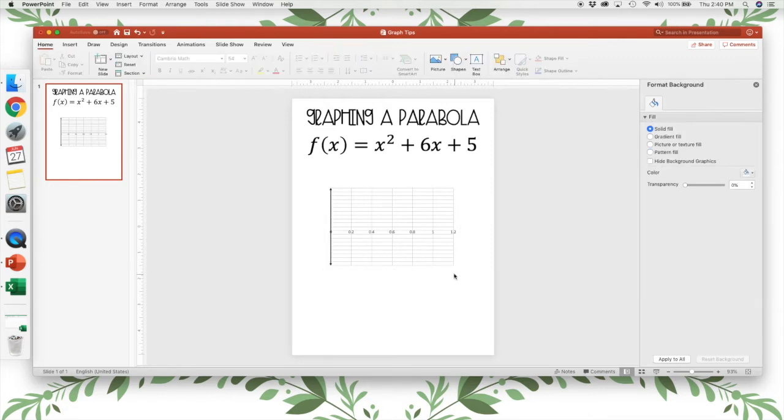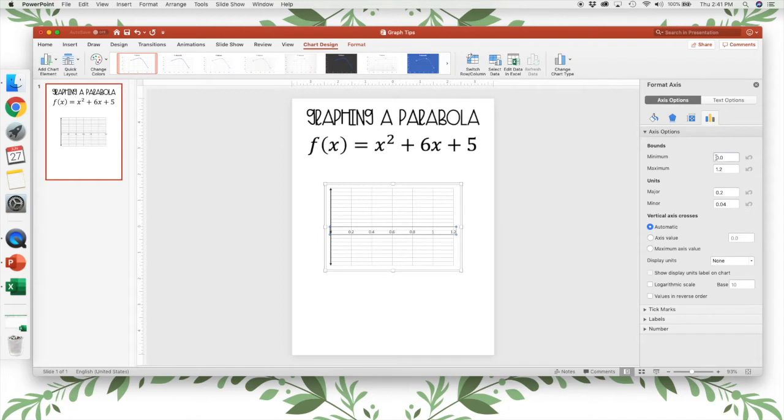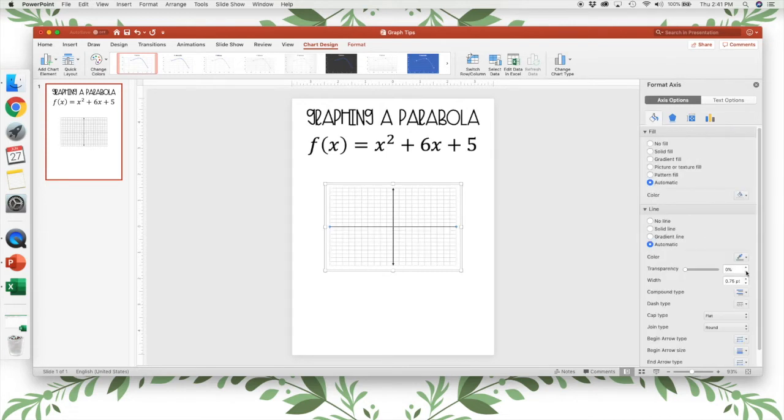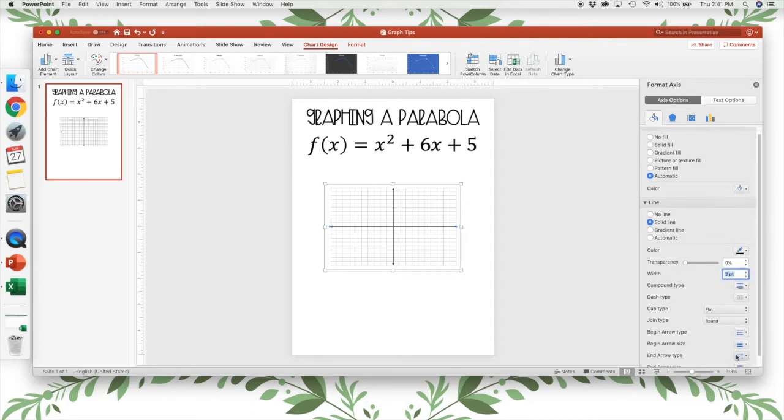Then I'm going to follow the same steps for my X axis. No labels, black line, width of 2, arrow, arrow.